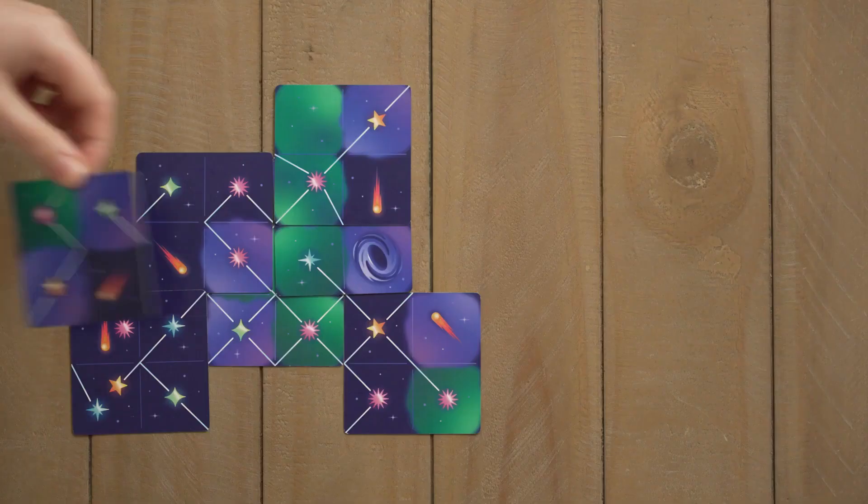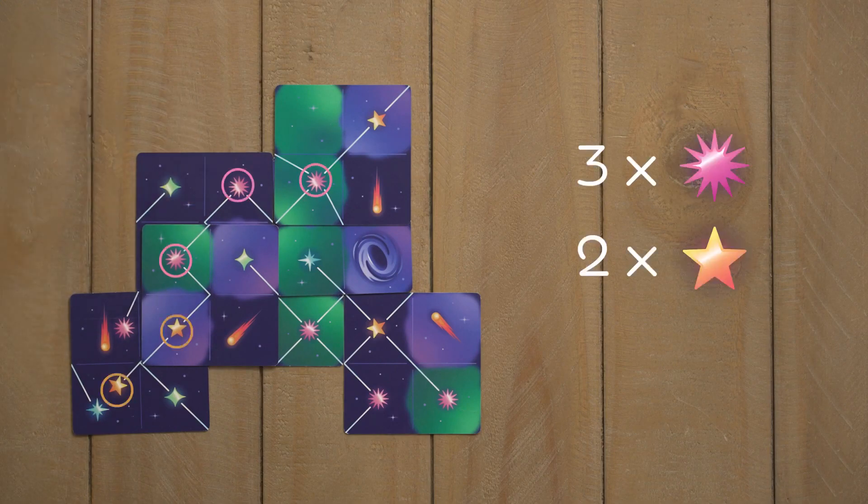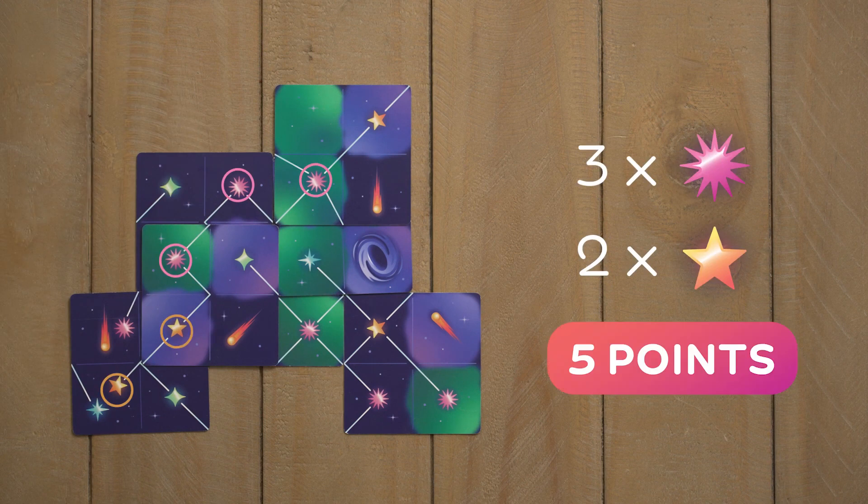Stars. You score points by creating unbroken chains of matching stars. You get one point per star in every chain of two stars or more that you add to or create.